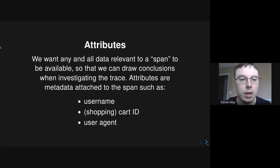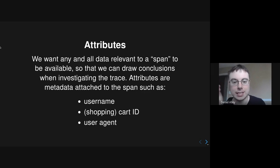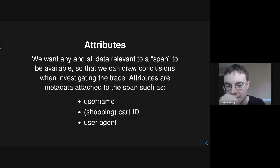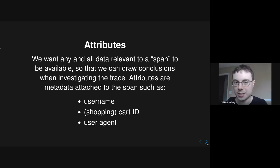Attributes are metadata attached to the span — such as what user made this request, what is their shopping cart ID, what is their user agent, and things like that. We want any and all data relevant to a span to be available so that when we're investigating after the fact, we can draw conclusions from it.